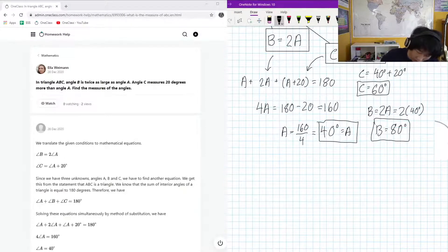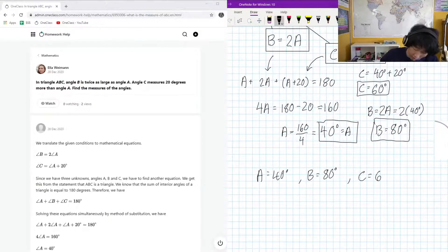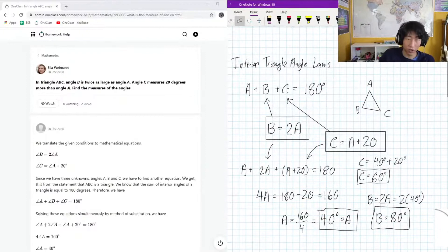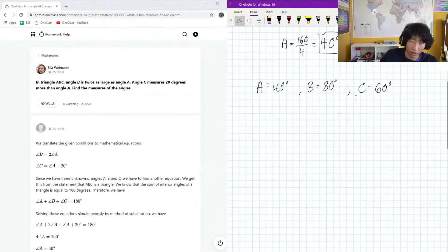So our final answer is A equals 40, B equals 80 degrees, C equals 60 degrees. Now, just to be 1000% certain about this, let's add them up all together with our original interior triangle angle law. And let's add them up and see if they still add up to 180.